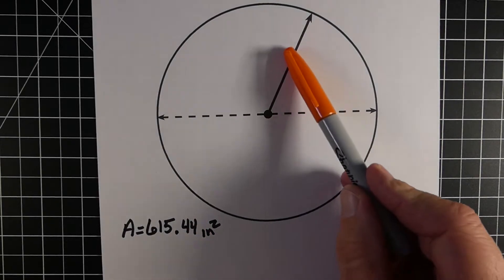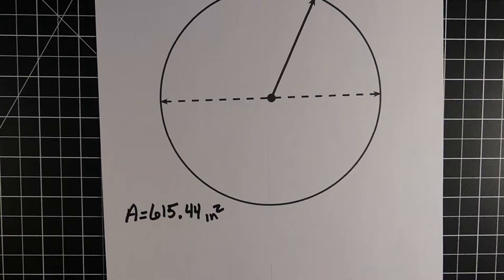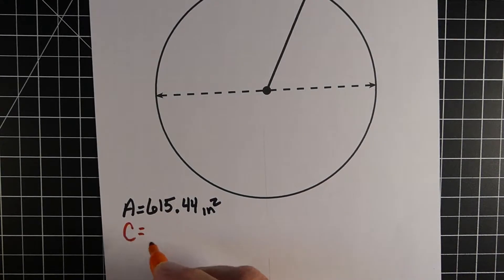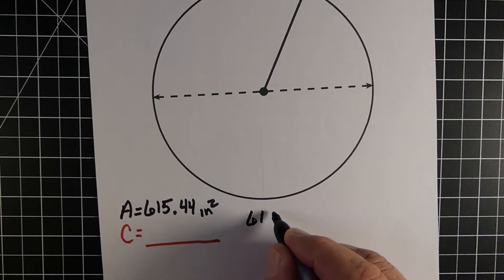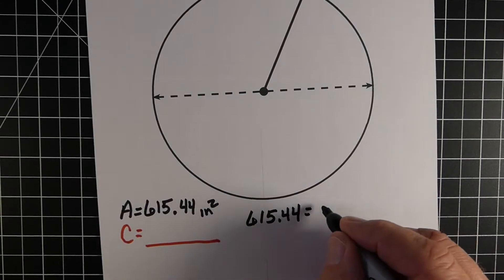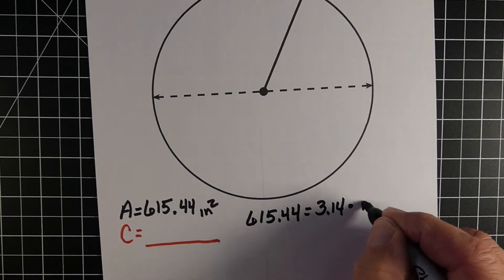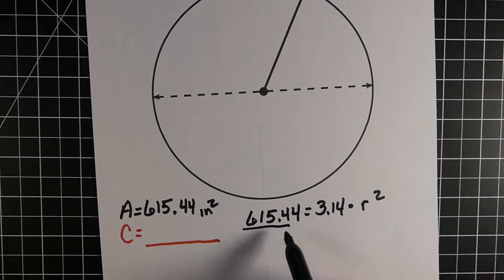In our second example, we're going to do the same thing. This circle has an area of 615.44 inches squared, and our goal is to figure out what the circumference would be. So we start with the formula for area of a circle: the area 615.44 equals pi times the radius squared.